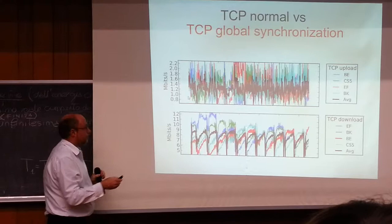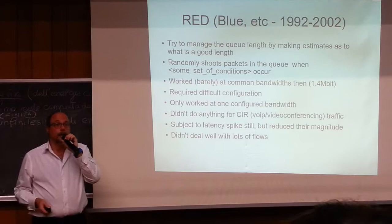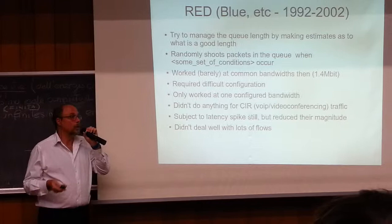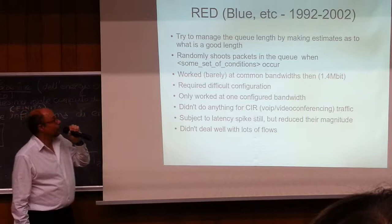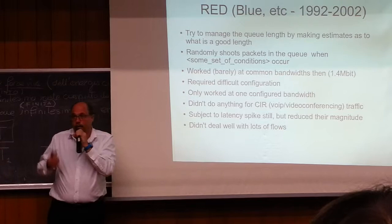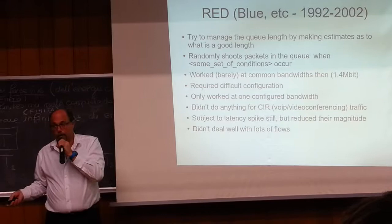Having seen that problem, a whole bunch of people after the internet got rebooted started working on ways of managing the queue length. The first algorithm was called RED. There was also Blue, a PI controller, and hundreds of papers written on these subjects — all sets of ideas that looked like they would work on paper. It turned out that nearly all of them were really hard to configure and weren't dynamic. Almost all of them were really bad for VoIP traffic because they needed special classification. And we still had latency spikes, though at least we got rid of the drop tail problem.